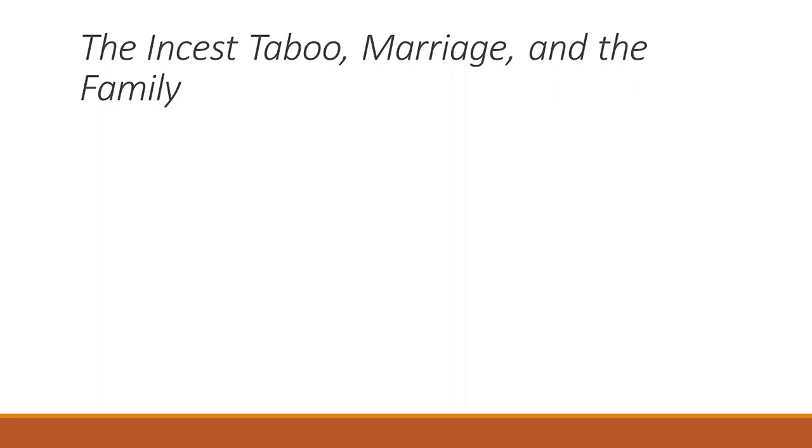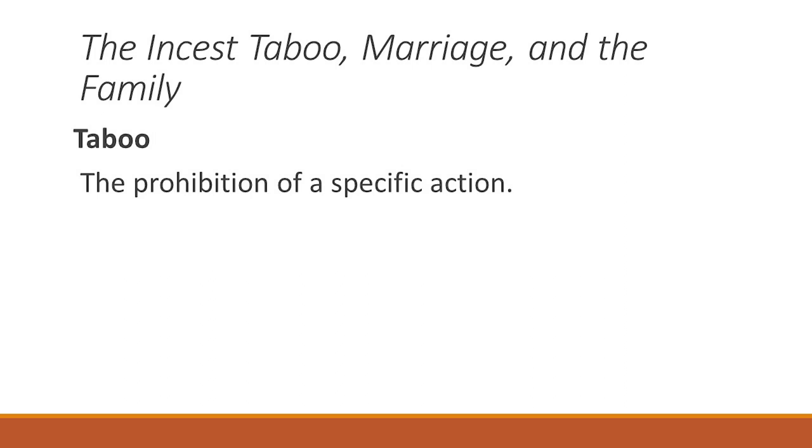Now we move on to the topic of the incest taboo, marriage and family. Marriage is a topic we will cover in one of the upcoming chapters. But what is a taboo? A taboo refers to a prohibition of a certain action — basically something you must never do according to a certain culture. For example, wearing black during Chinese New Year or giving the gift of a clock in Chinese culture are considered examples of taboo.